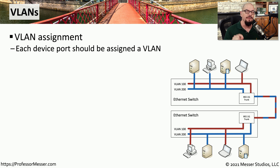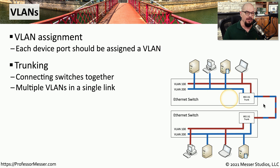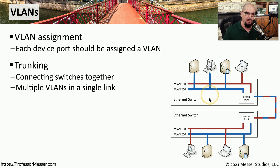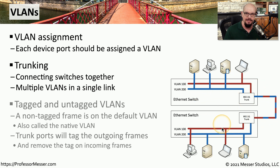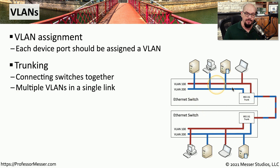If you're configuring the interface on a switch, you may have to define what VLAN is associated with that physical interface. Every port on a switch should be assigned to a particular VLAN. You might also need to configure VLANs across trunk configurations, or define what VLANs are able to traverse a particular trunk, which allows you to connect multiple switches together and still maintain connectivity between the same VLANs.